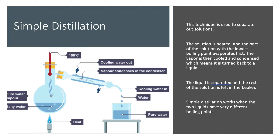Simple distillation is used to separate out solutions which contain two liquids of different boiling points. The solution is heated and the part of the solution with the lowest boiling point evaporates first. The vapour is then cooled and condensed, which means it is turned back to liquid form, and the liquid formed is separated while the rest of the solution is left in the beaker.